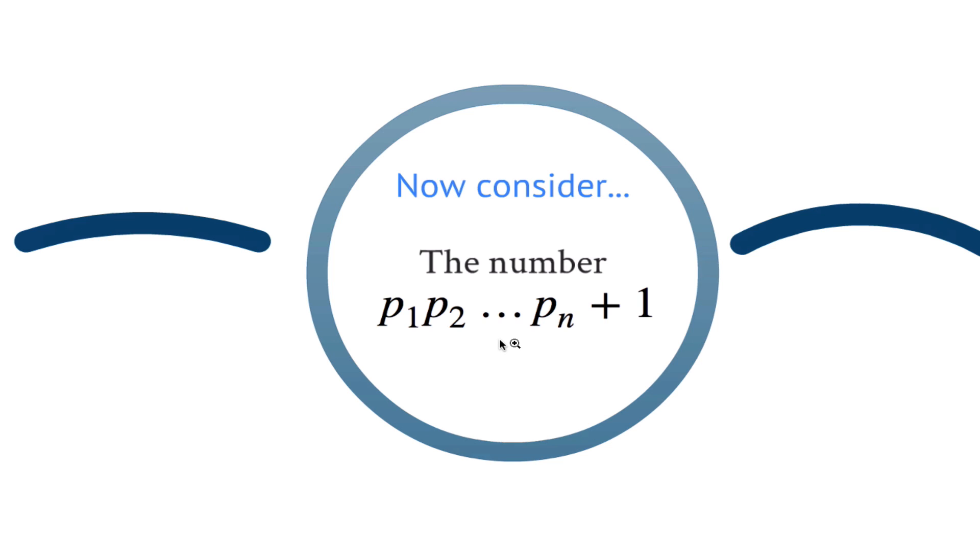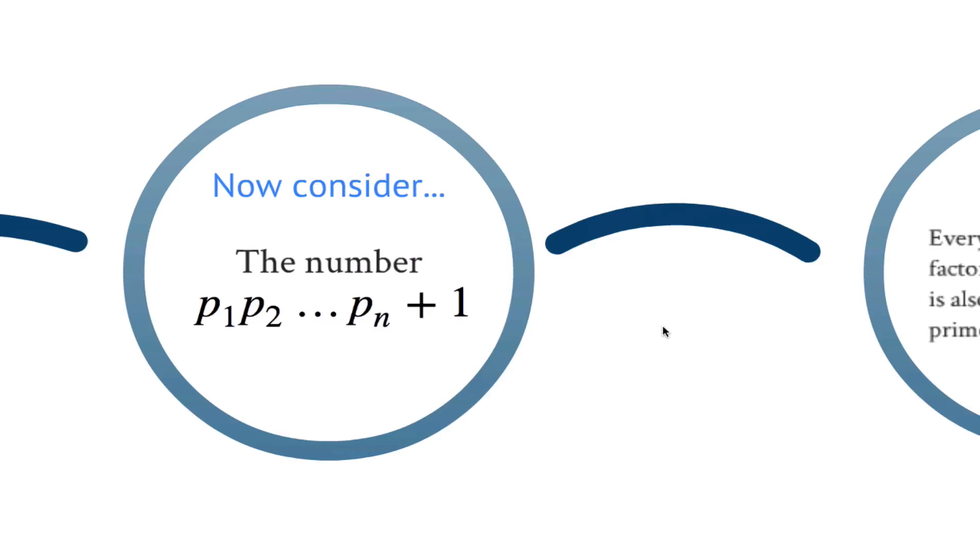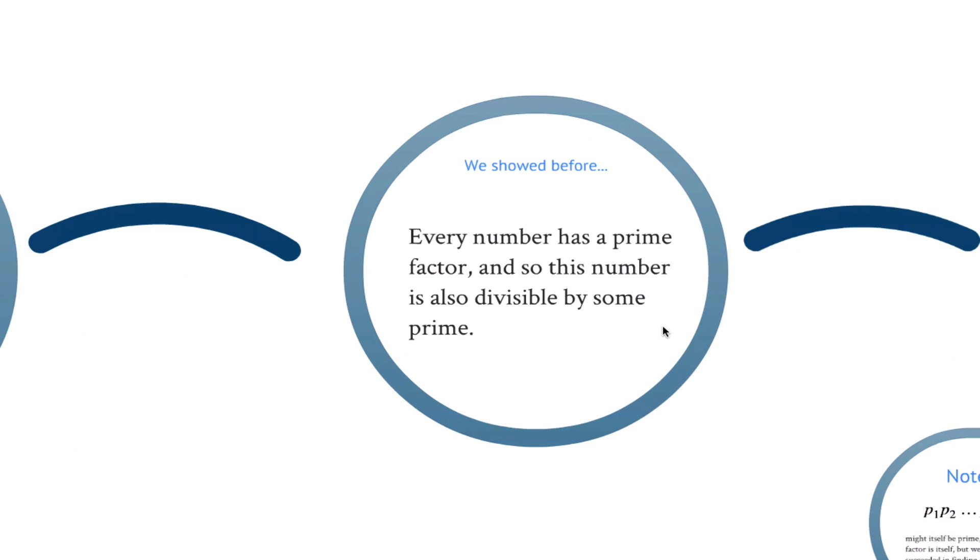Now we consider the number that we obtain by multiplying together all of these prime numbers and then adding 1. We've shown before that every number has a prime factor, and so this new number that we've just obtained must also be divisible by some prime number.